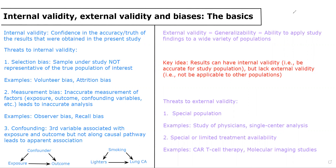So let's start with internal validity. Internal validity is basically what is your confidence in the accuracy or truth of the results that are obtained in the present study. Basically, do we actually believe the results that we obtained? And there are three main threats to internal validity.